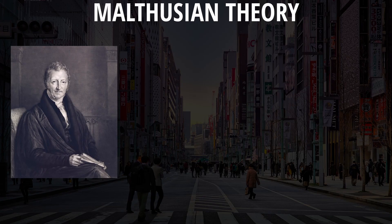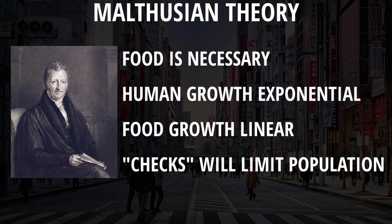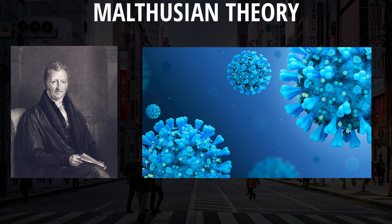First off, let's finish talking about population with Thomas Malthus, a philosopher who wrote an essay about population growth. Here are some of the basic principles: food is necessary, humans grow faster than the ability to grow food, and thus checks will limit population. These checks included positive and negative checks, limiting population through decreasing birth rates or increasing death rates with diseases and famine.